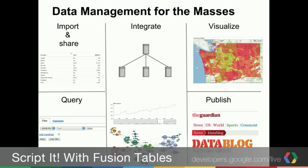This slide shows a very typical flow for compelling applications people have created — you might have a database of addresses or locations with properties like the number of people who live there or the amount of car traffic at an intersection. You can create that data as a CSV, import it, and we'll geocode the addresses, analyze shapes, handle KML shapes, and allow you to merge that with other data — this is the integration or fusion step — and then visualize it on a map.